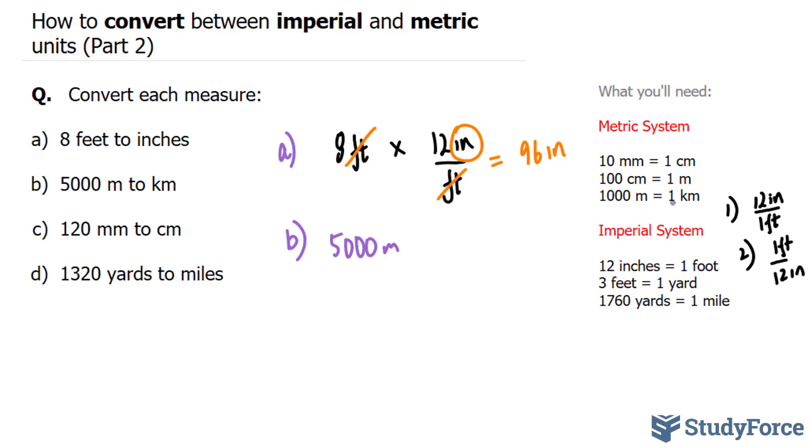And the version that we will use is the one that has meters at the bottom this time. Because if the meters are at the bottom, 1,000 meters at the bottom, and kilometers at the top, multiplying this out will cancel out the meters. 5,000 times 1 divided by 1,000 is equal to 5 kilometers.